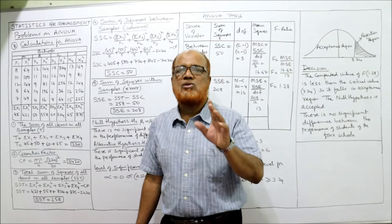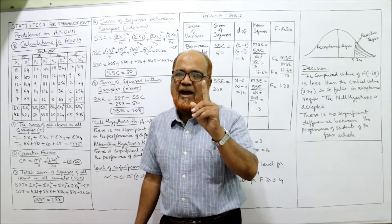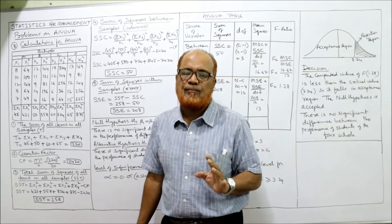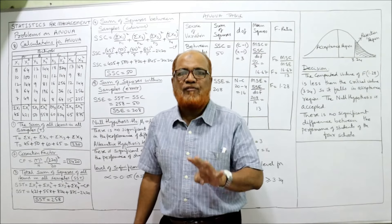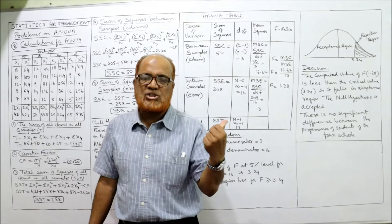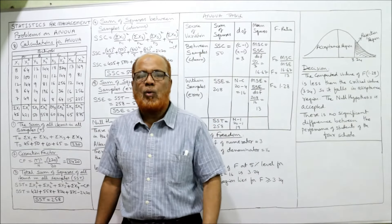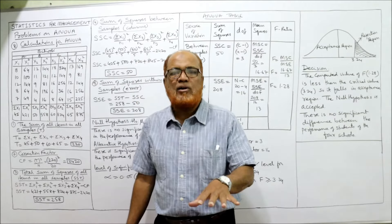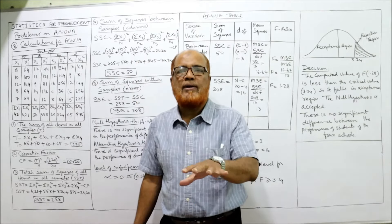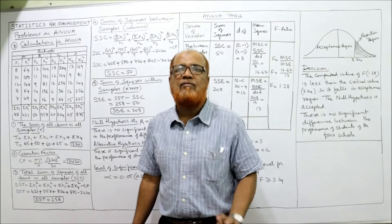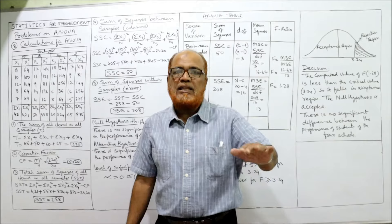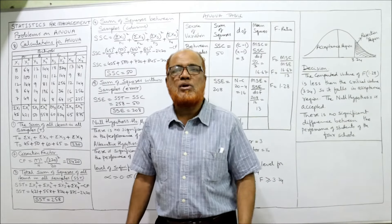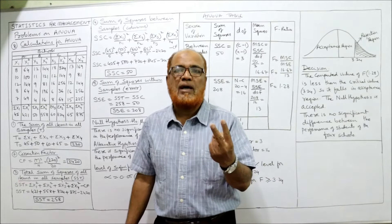ANOVA has two classifications: two-way and one-way. If you want to find out the differences of only one factor, we apply one-way ANOVA. So far four problems have been completed using only one-way ANOVA. In this video I'm going to do two more problems on one-way ANOVA, and in the next video I'll start problems on two-way ANOVA.